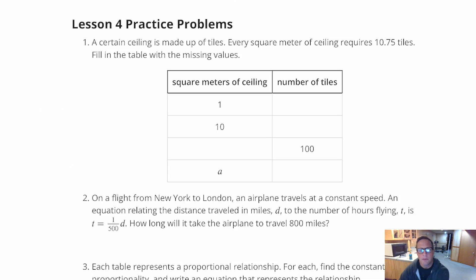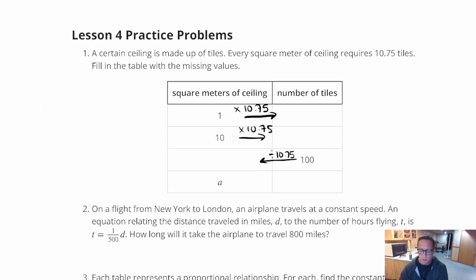Okay, so every square meter requires 10.75 tiles. So what we're going to do is, when we're going this way, we're going to multiply by that 10.75. When we're going this way, we're going to divide by 10.75. So when we do 1 times 10.75, that's pretty easy math right here for this first one, 1 times 10.75 is 10.75 tiles.